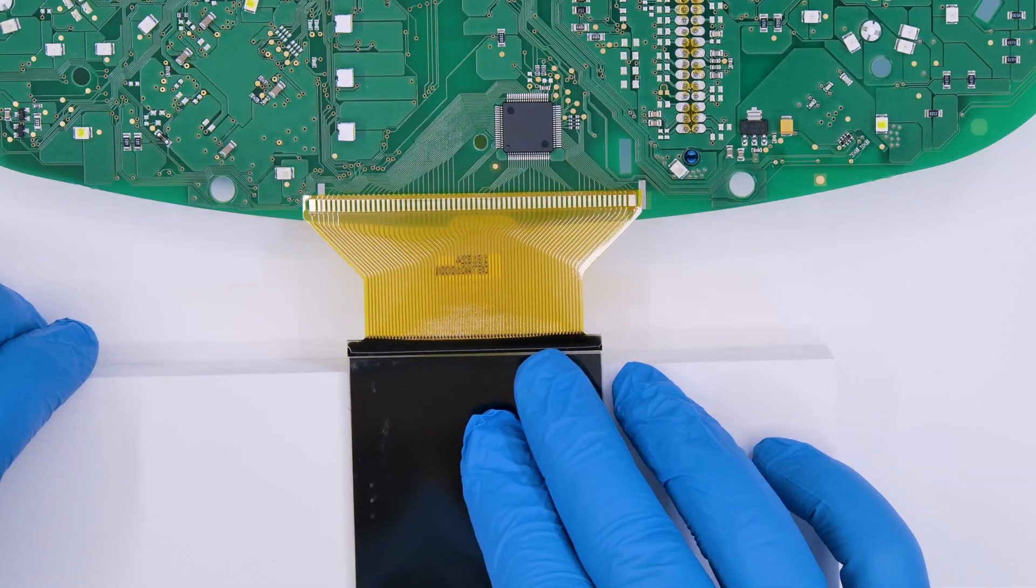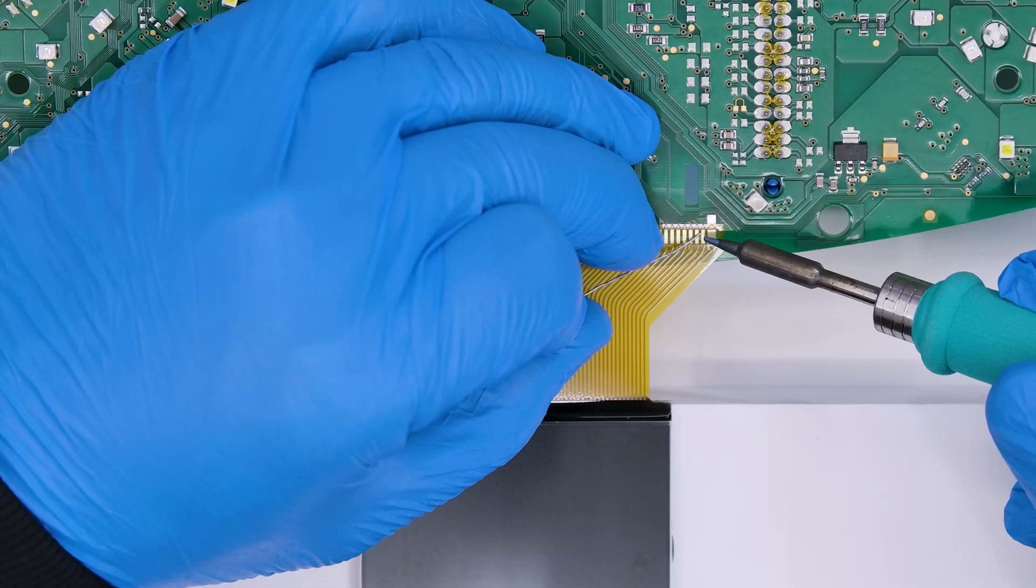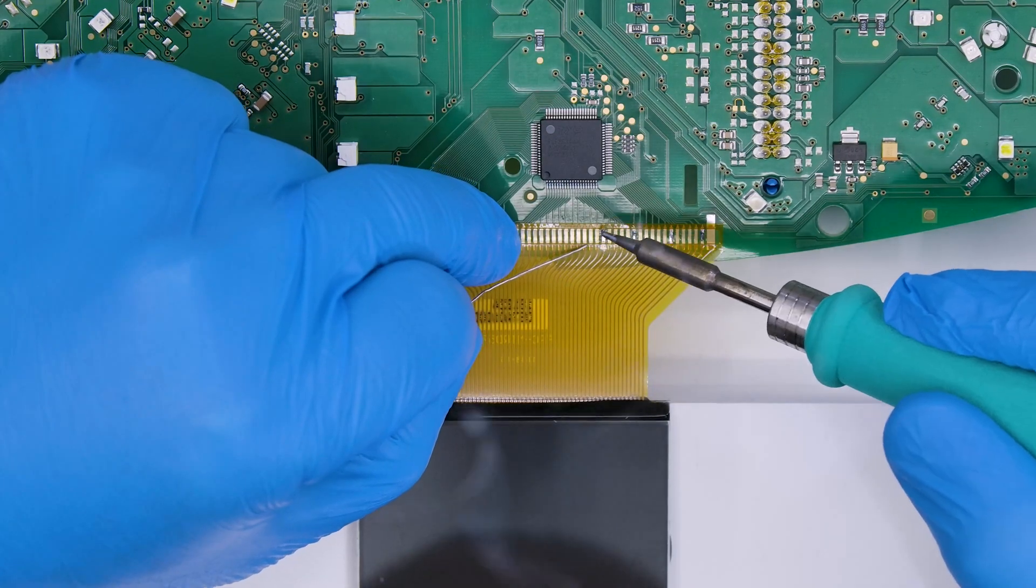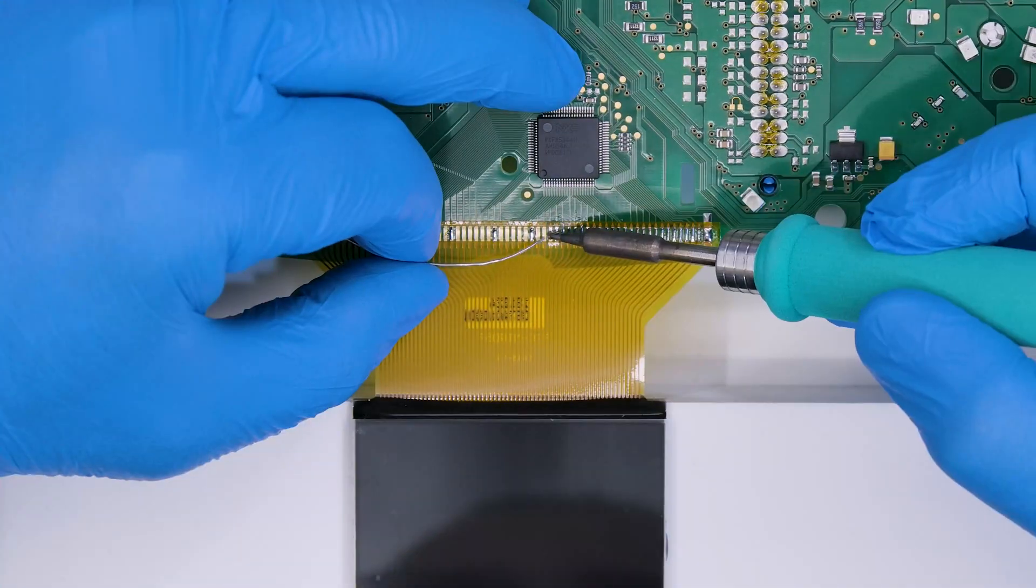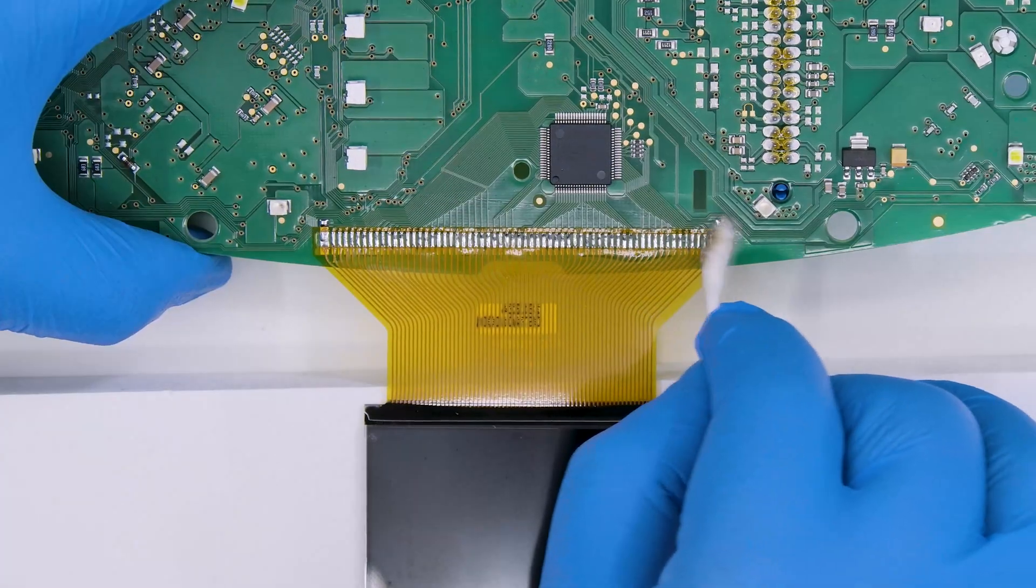With the head of the spudger, position the FPC of the Minitools display and solder it on some points to fix it. Then solder the pins one at a time. Clean with some solvent.